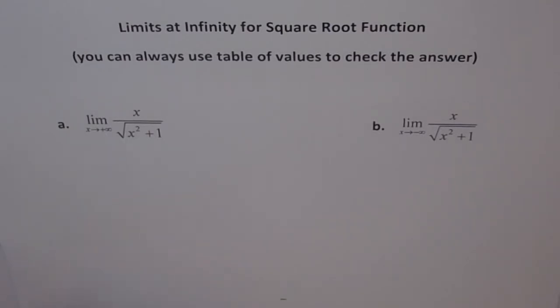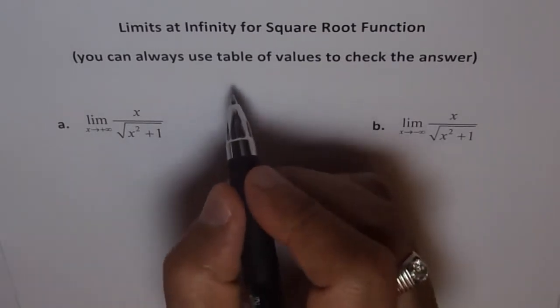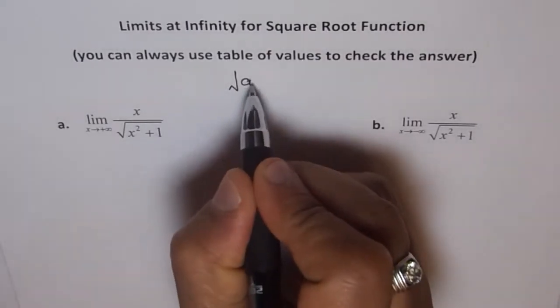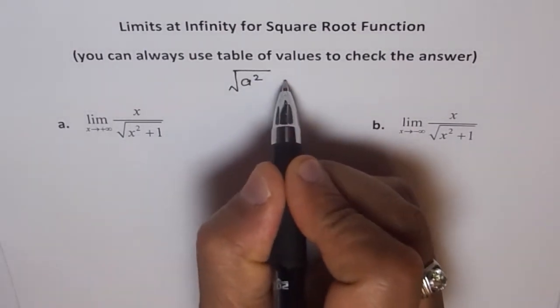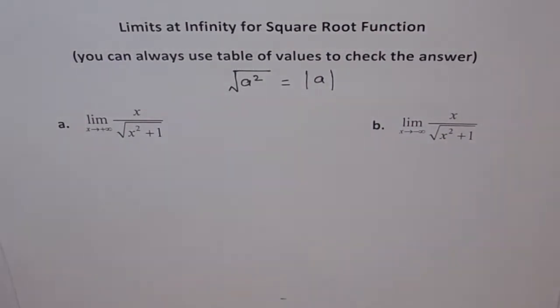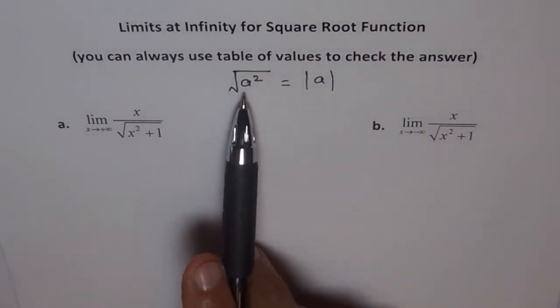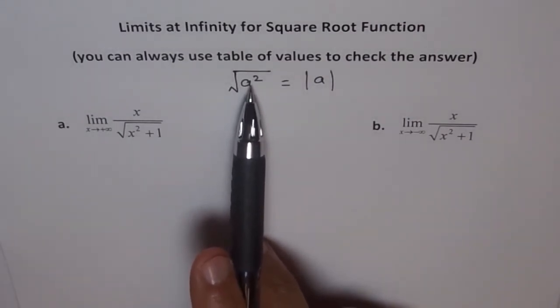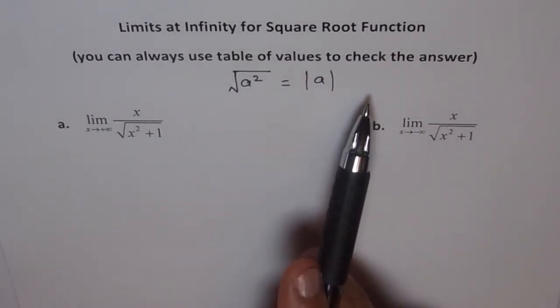I also recommend to watch my video on what is square root of a. So we have square root of a and this square root of a is actually equals to absolute value of a. Square root of a is not just a.